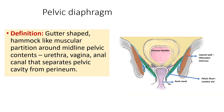The midline contents visible in the picture are the urinary bladder and its continuation the urethra, followed by the vagina in females, and posteriorly the anal canal. The structures passing from the pelvis to the perineum pass through this muscular diaphragm, the pelvic diaphragm.